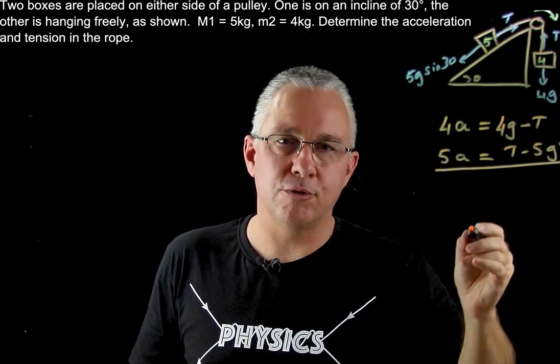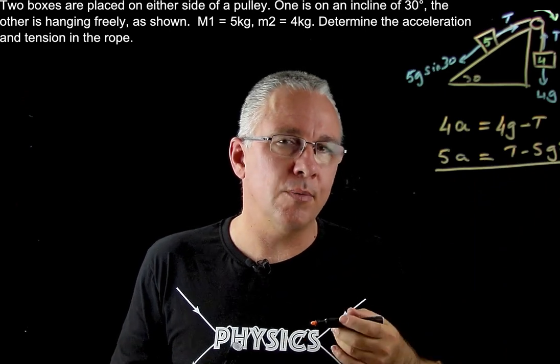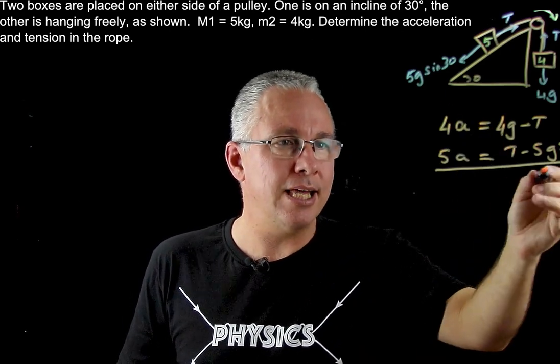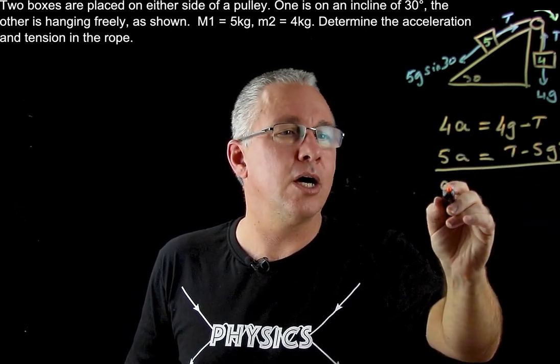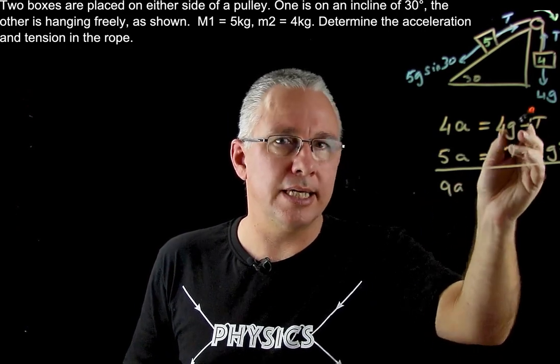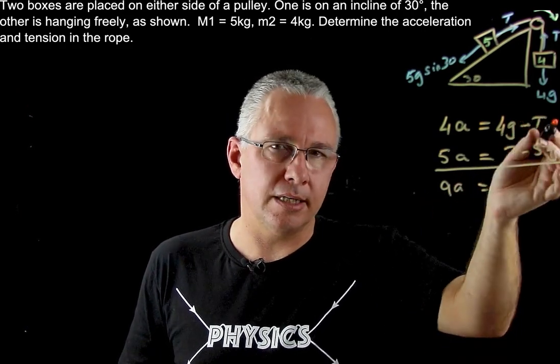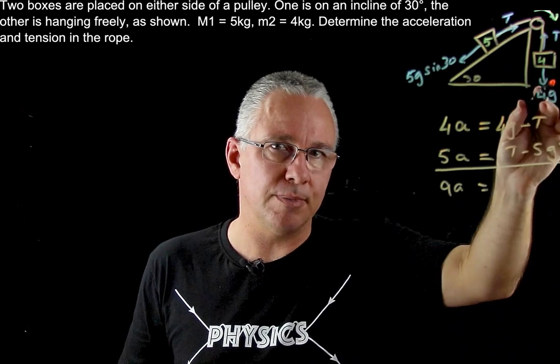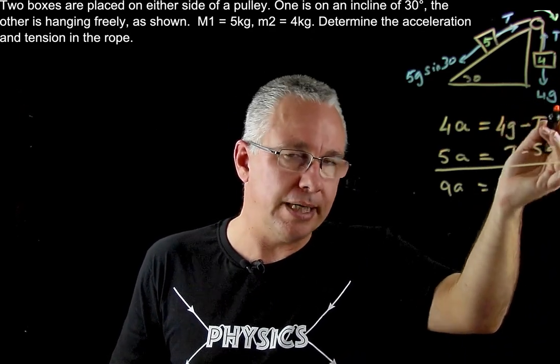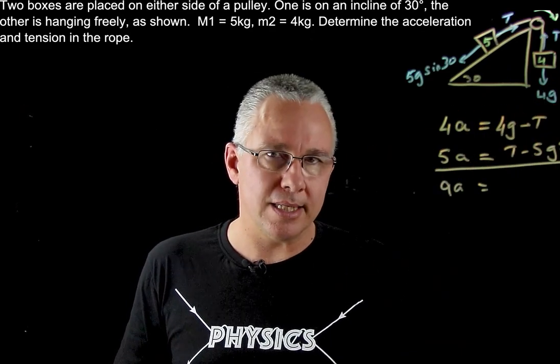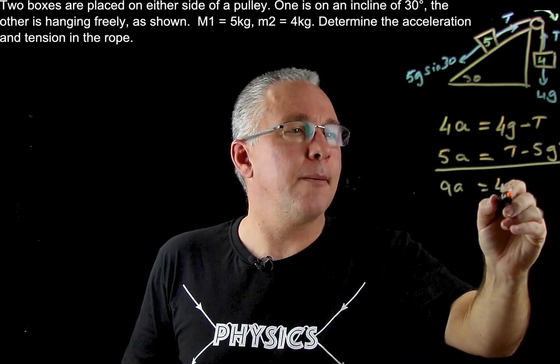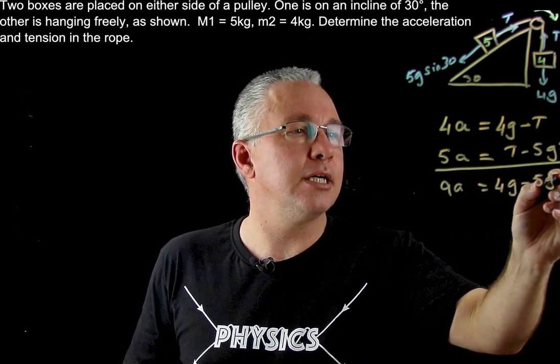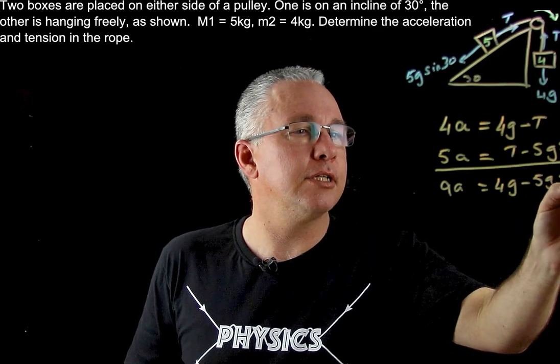Now we have two equations and two unknowns and we solve them by elimination. So if I add these two together I'm going to get 9a over here, the T's cancel out. If you have multiple forces you have more equations but you'll have T1, T2, T3 depending on how many ropes you have and they'll all cancel out. So I end up getting 4g minus 5g sine 30.